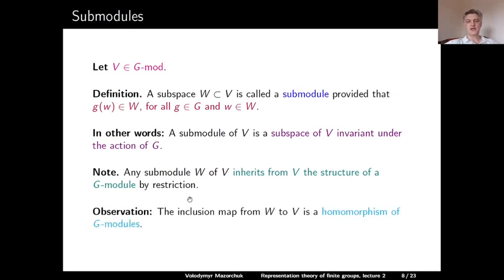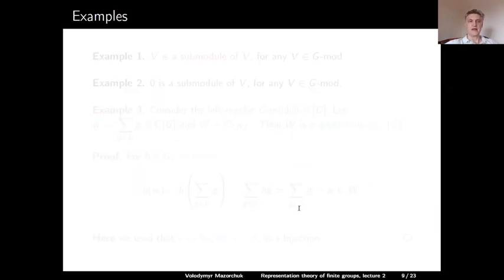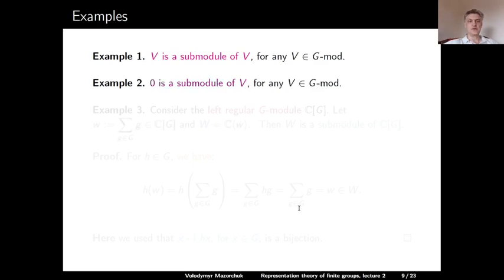The inclusion map from a submodule into V is obviously a homomorphism of G-modules. Here are some examples. The module itself is a submodule of itself: V is a submodule of V for any module V in G-mod. Also, {0} is a submodule of any module, because the elements of G act by linear operators and linear operators always preserve 0.